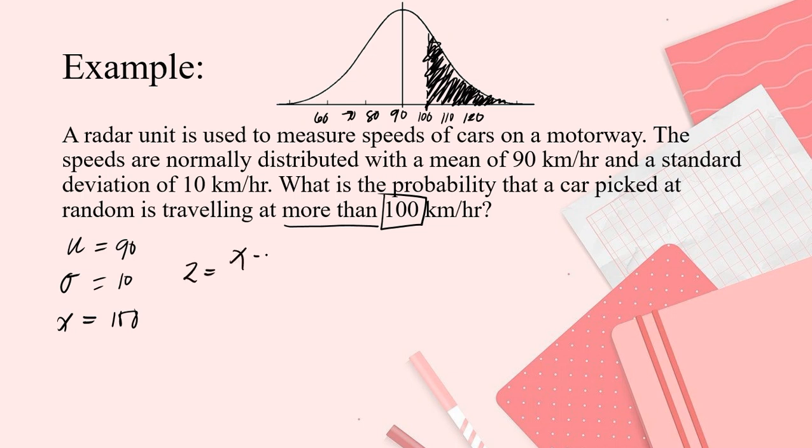So, z is X minus mean divide by s. So, that is 100 minus 90 divide by 10. So, 10 divide by 10, that is 1. This is equal to 1.